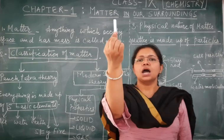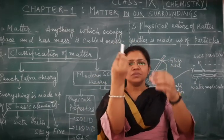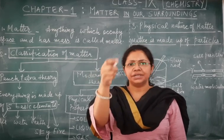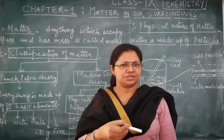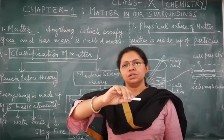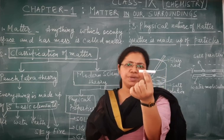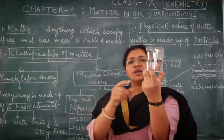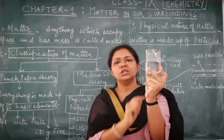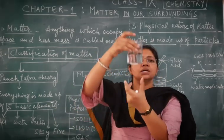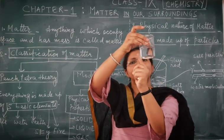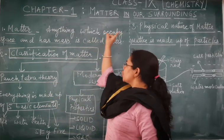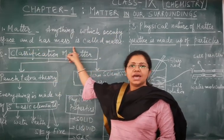For example, I am holding a piece of chalk in my hand. That chalk piece is an example of matter because it has some mass — maybe 5 grams, 10 grams — and when I place it on the table it occupies some space. Similarly, in this beaker I am having water. This water is also an example of matter because the water inside this beaker occupies some space and also has some mass. So anything which occupies space and has mass is termed as matter.